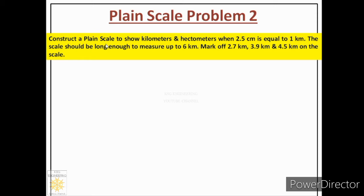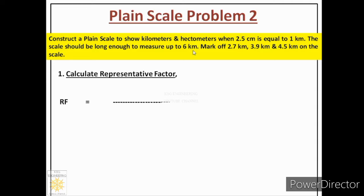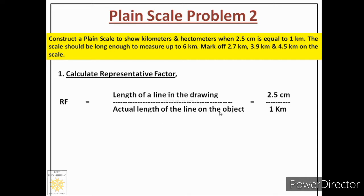We have to construct a plane scale which can measure up to 6 kilometers, and we cannot draw a line of 6 kilometers on our paper. So first we have to calculate the representative fraction in order to find out by how many times we can reduce this distance to accommodate it on our paper. The formula is: length of a line in the drawing divided by actual length of the line on the object. Here, 1 kilometer is the actual length and 2.5 centimeters is the length in the drawing.